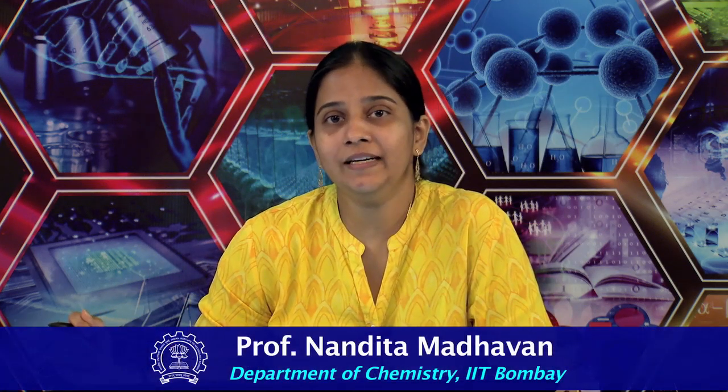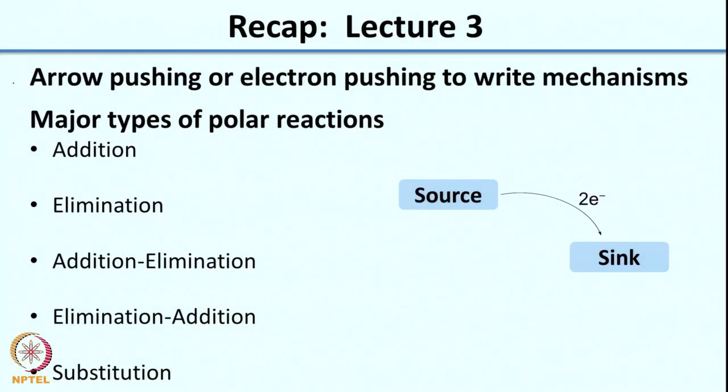Welcome to the 4th lecture of this week on mechanisms. Just before we move on, a recap of what we did in the previous lecture: we looked at arrow pushing or electron pushing to write reaction mechanisms, and we also classified polar reactions and looked at the major types of reactions which could be seen under polar reactions.